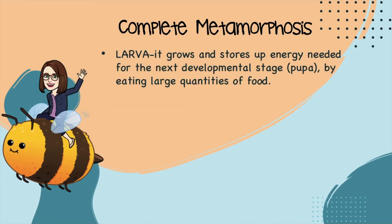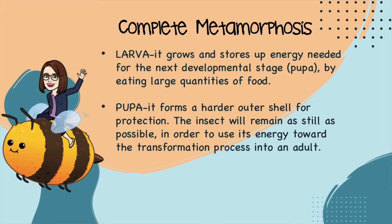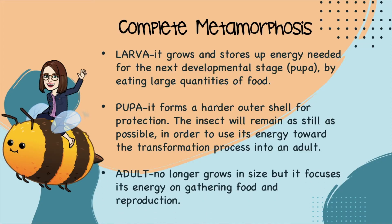Complete metamorphosis. The larva stage — it grows and stores up energy needed for the next developmental stage, the pupa, by eating large quantities of food. The larva's main goal is to eat, eat, eat. In the pupa stage, it forms a harder outer shell for protection. The insect will remain as still as possible in order to use its energy toward the transformation process into an adult. And then the adult stage — no longer grows in size, but it focuses its energy on gathering food and reproduction to start the process all over again.